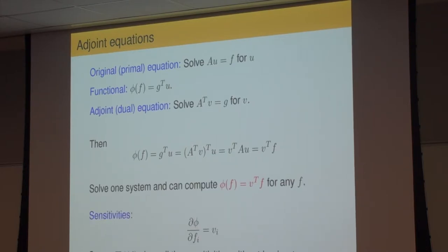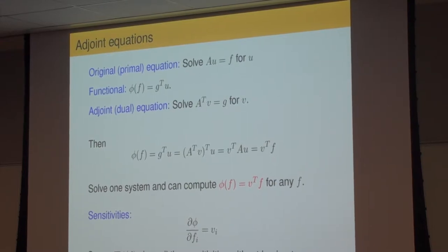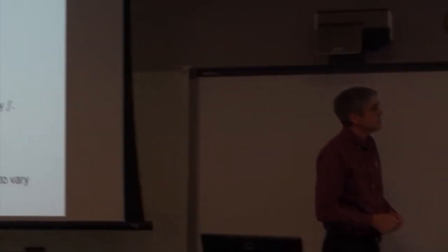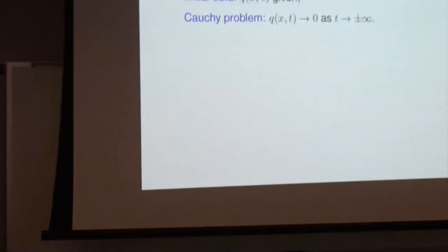Also, if we want sensitivities — the derivative of phi with respect to one component of f — we can differentiate phi(f) = p^T f, which is just the sum of p_j times f_j. Differentiating with respect to f_i gives just p_i. So the elements of this adjoint solution p are exactly the sensitivities of phi with respect to each component of the data. If you're doing optimization or an inverse problem, you can calculate the gradient of phi(f) directly from this vector.